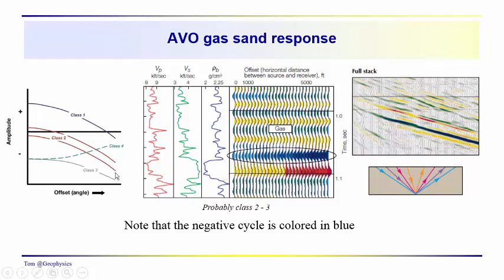Perhaps a class two or three anomaly. But we can see that when we stack this, the amplitude that we'll see in the stack trace is going to be an average of all these amplitudes, somewhere in the middle. You might predict an amplitude like this, get an amplitude like this, and say, well, that's no big deal.